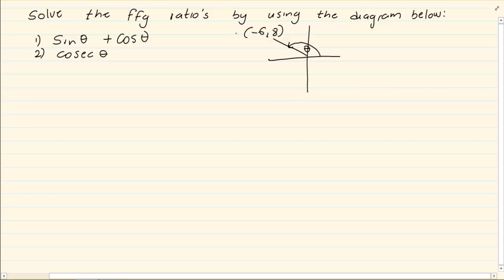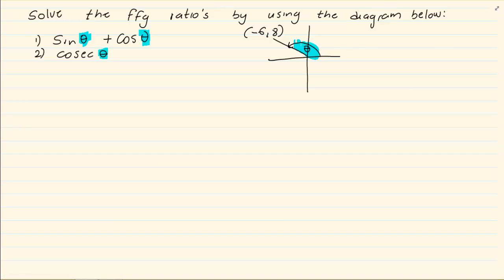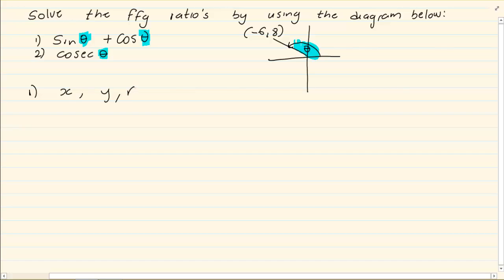When doing these kinds of questions, you will notice that the theta in the diagram is the same one that is in the question. They will specifically say you may not use a calculator, which means you cannot link theta directly. When they say you may not use a calculator, your aim is to get x, y, and r — and you do that by using Pythagoras.